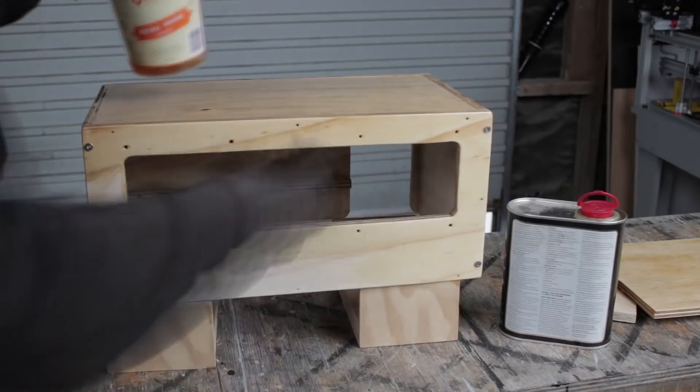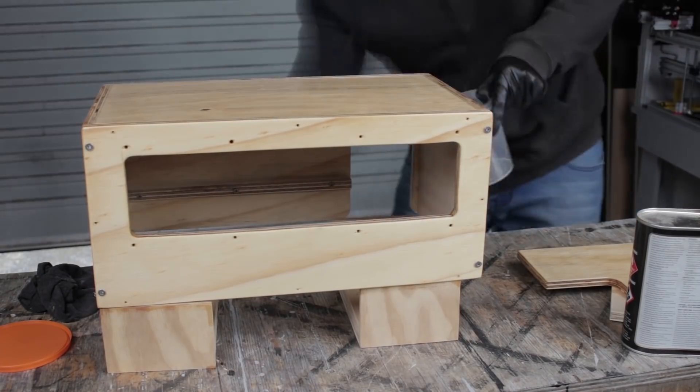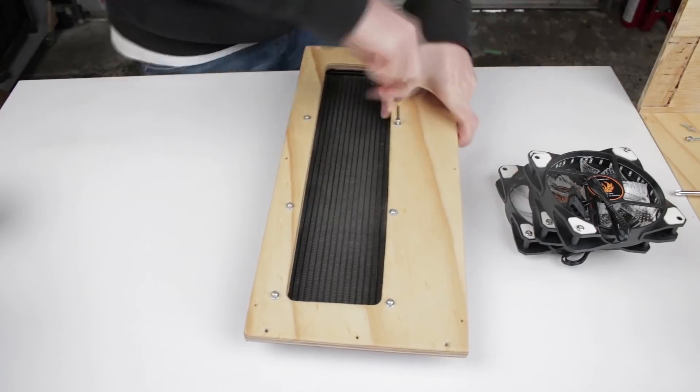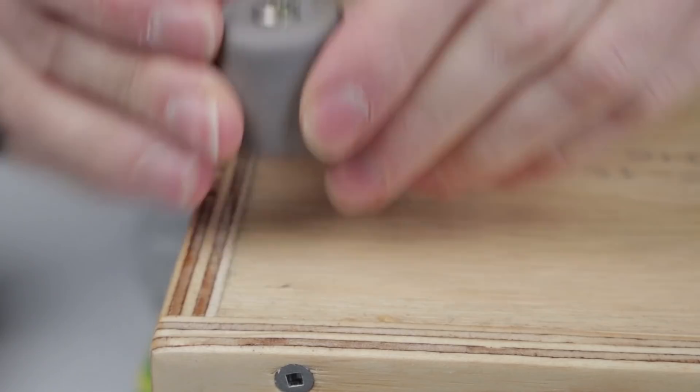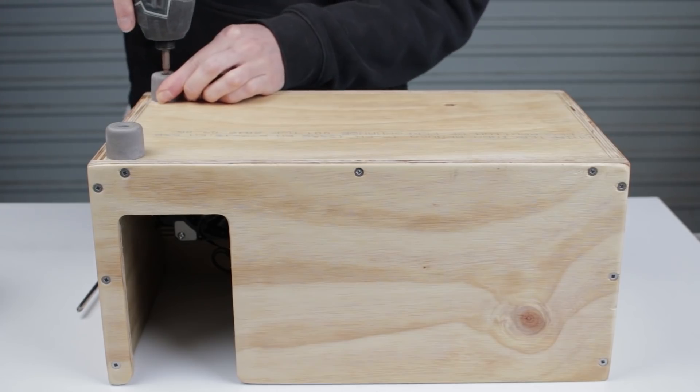Before I install the electronics I'm giving the box a couple coats of polyurethane finish to keep everything in good condition. And once that's dry I can reinstall the radiator. Oh and before I forget I got these little rubber feet to add some dampening and to keep it elevated.